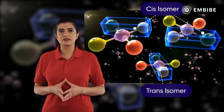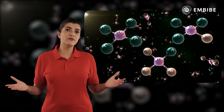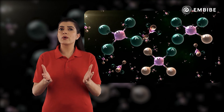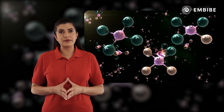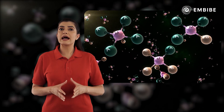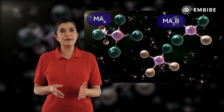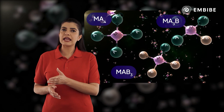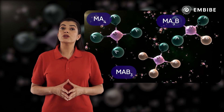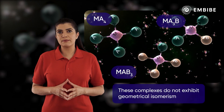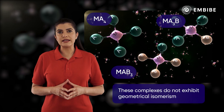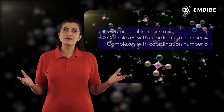Quite obviously, square planar complexes of the type ma4, ma3b, and mab3 do not exhibit geometrical isomerism.